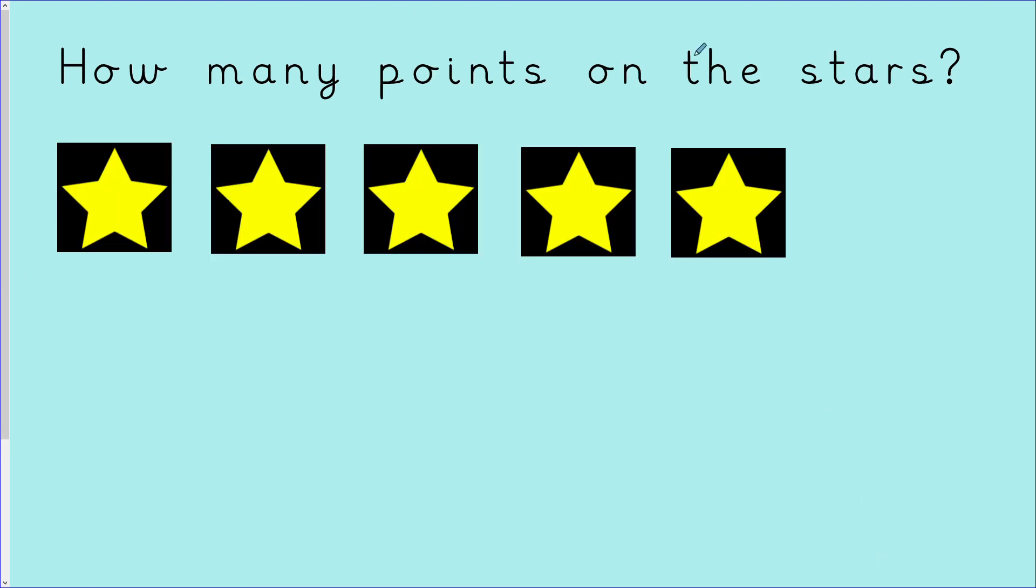Now we have some stars. On each star there's 1, 2, 3, 4, 5 points on the star. How many points are there all together? Pause the video here and have a go. Let's do it together. 5, 10, 15, 20, 25. There are 25 points all together. Excellent, well done.